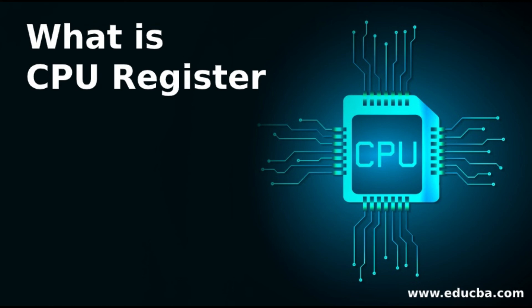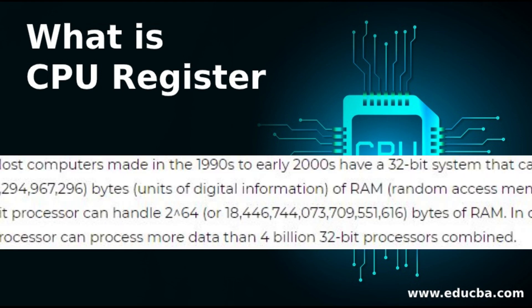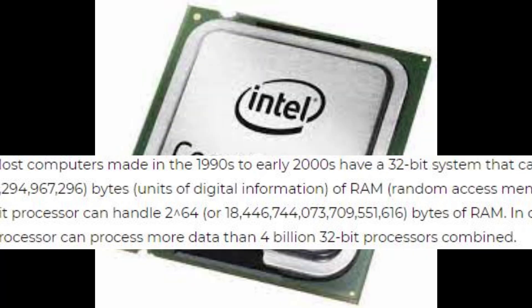अगर major difference की बात की जाए 32-bit और 64-bit में, तो आपके समझने के लिए important है कि जो 64-bit होता है — जितने भी dual core processors हैं और उनके बाद जितने भी processors हैं, including dual core — उन सबके अंदर 64-bit की capability मौजूद है।